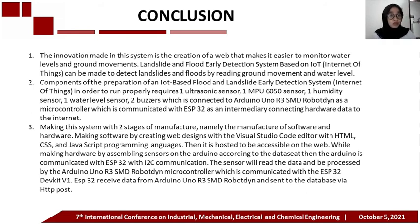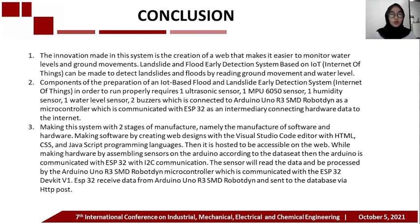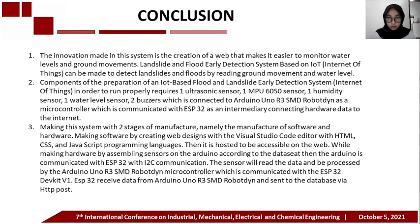Next, making this system involves two stages of manufacture: software and hardware. Software is made by creating a web design with Visual Studio Code using HTML, CSS, and JavaScript programming languages, then hosted on the web. Hardware is made by assembling sensors on the Arduino according to the data sheet. The Arduino communicates with the ESP32 using I2C communication. The sensor reads data and it is processed by the Arduino, which communicates with the ESP32. The ESP32 receives data from the Arduino and sends it to the database via HTTP POST.